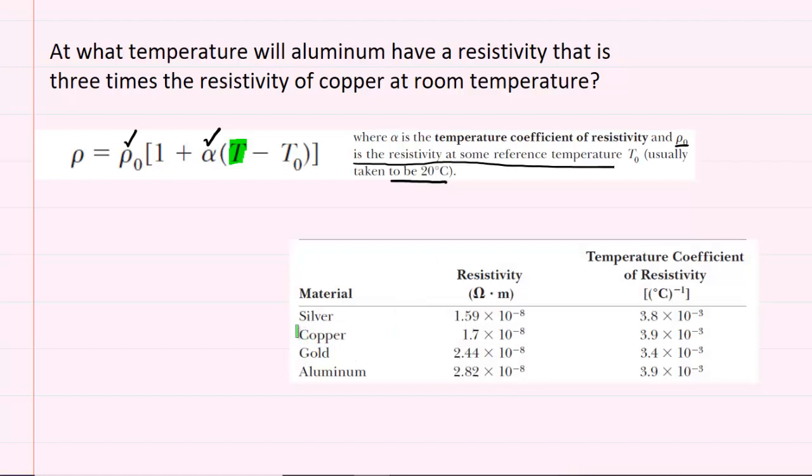For example, for copper, if we wished to, we could look up its resistivity at the reference temperature. In other words, we could look up this value right here, and we can see that copper has a resistivity at 20 degrees Celsius of 1.7 times 10 to the negative 8.